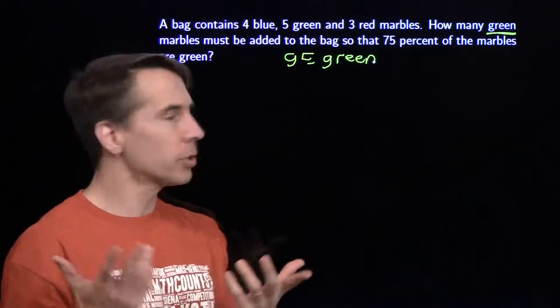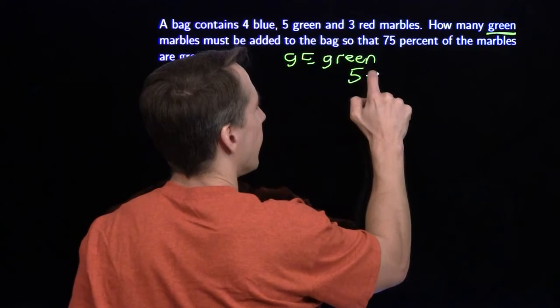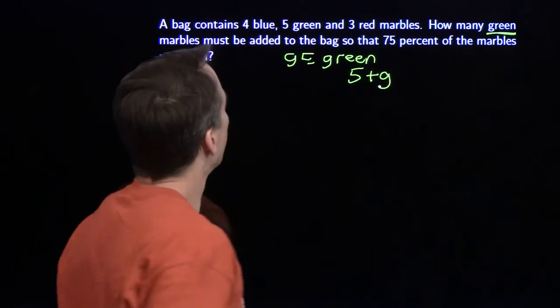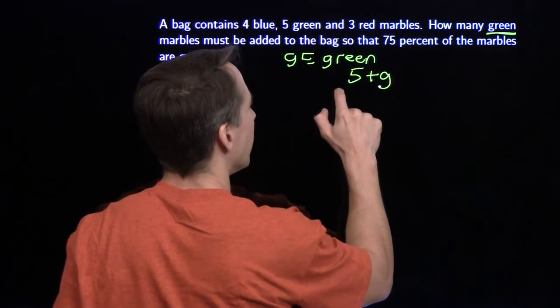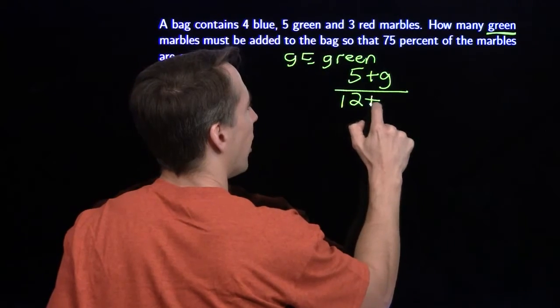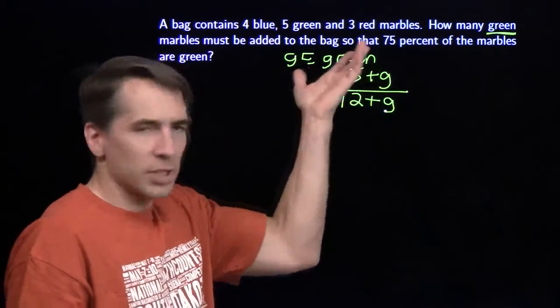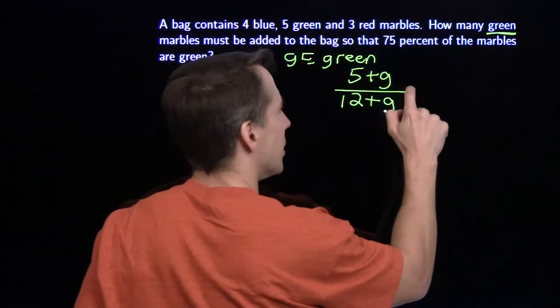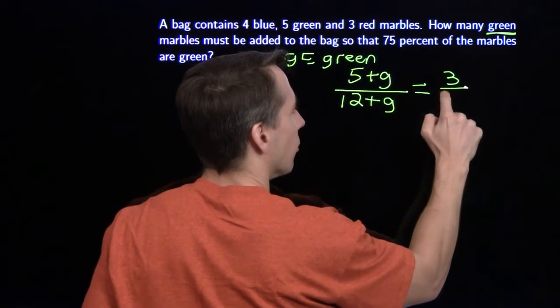The total number of green marbles I have at the end: I have my 5, I add on G more. The total number of marbles: I have 4 plus 5 plus 3, which gives me a total of 12, and then I'm going to add on those G marbles. So that 5 plus G out of the 12 plus G equals 75%. Now, 75% I'm going to write as a fraction. I've got a fraction over here, I'm going to write a fraction over there.